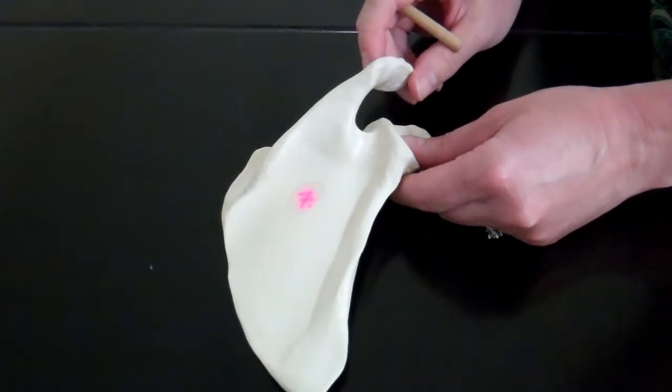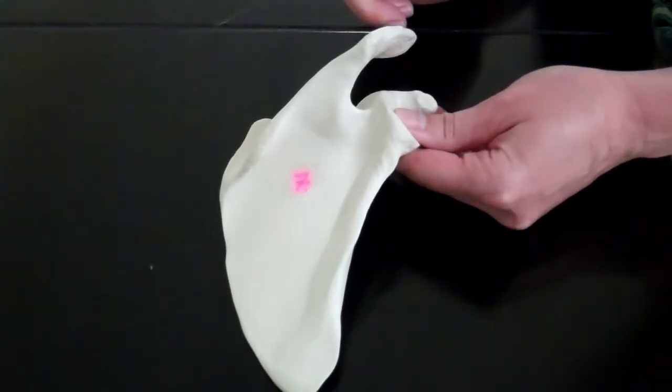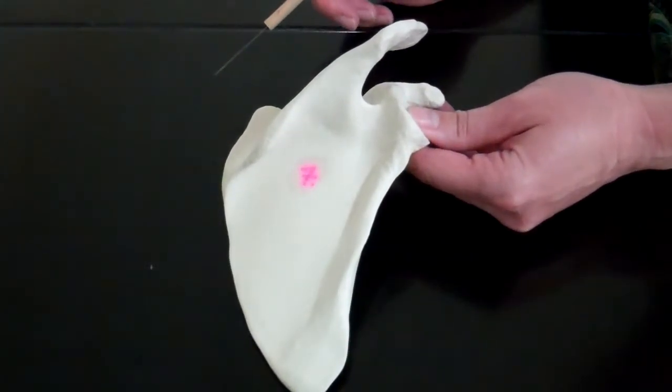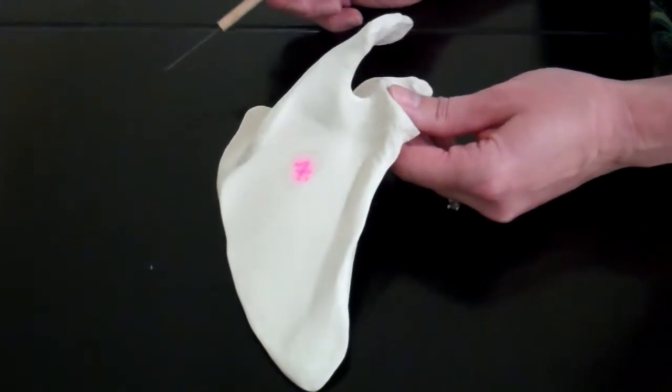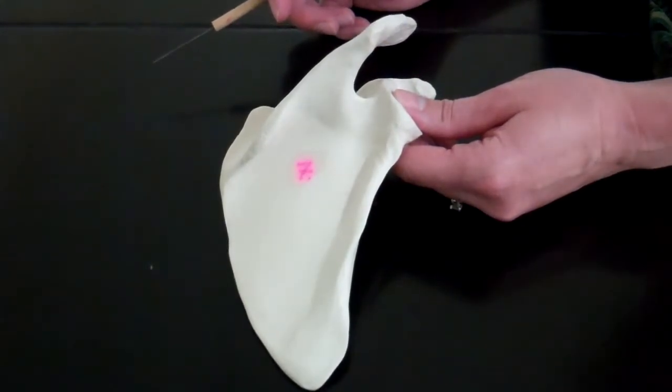And here we have the scapula. Now the scapula is what we often call our shoulder blade. Random fact: Native Americans used to use deer scapulas as shovels. I did not know this.